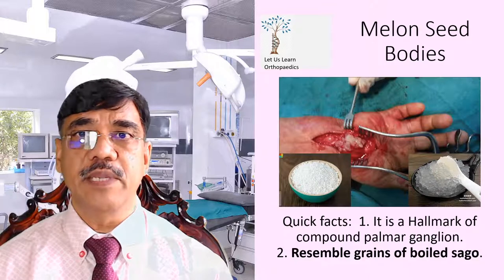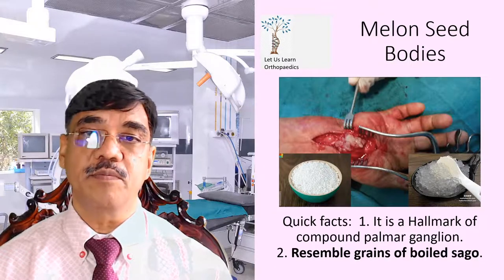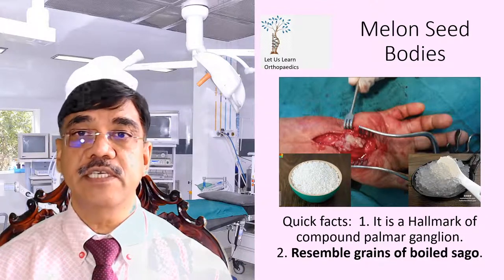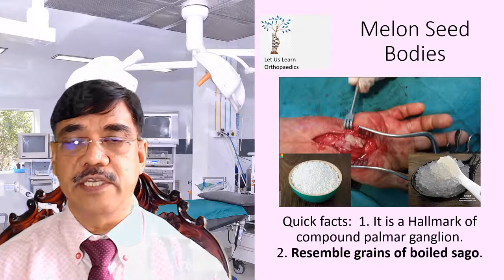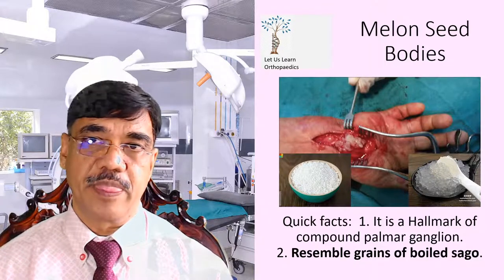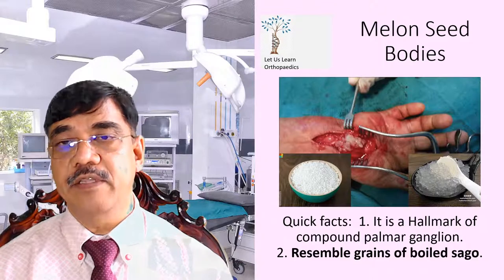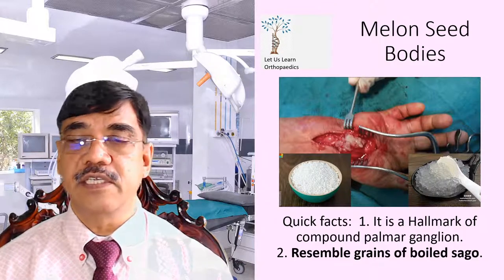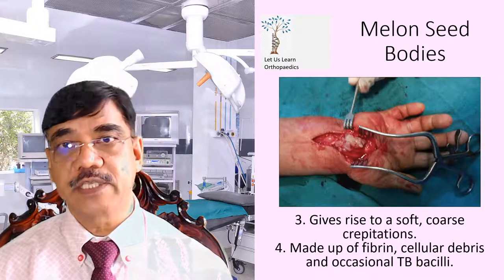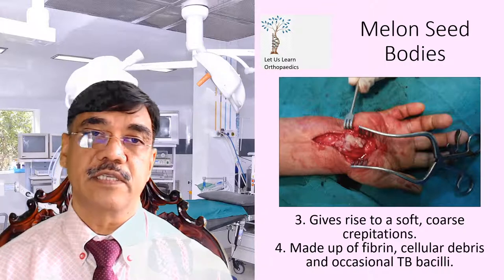Now regarding the melon seed bodies, let us have some quick facts. One: it is a hallmark of the Compound Palmar Ganglion. Second: it resembles grains of boiled sago. Now you can see in this picture, two bowls are shown. In the first bowl, there are unboiled sago grains, and in the second bowl — the black bowl — that is boiled sago. You can compare the boiled sago with the melon seeds seen in this resection. The melon seed bodies give rise to soft, coarse crepitations, and they are made up of fibrin, cellular debris, and occasionally tubercle bacilli.